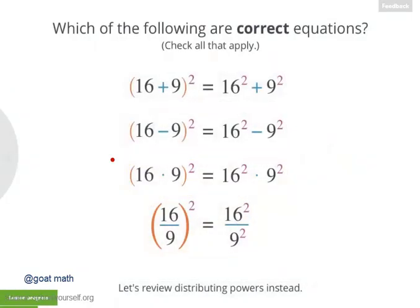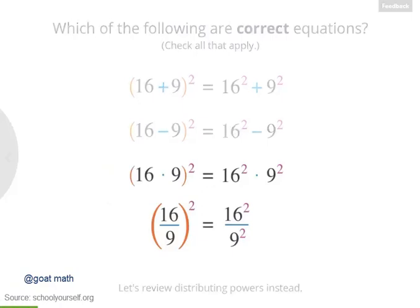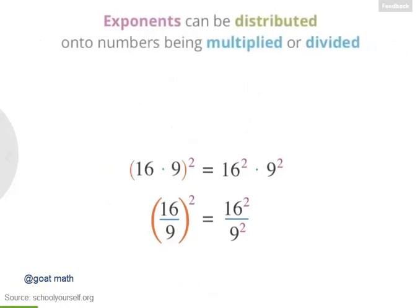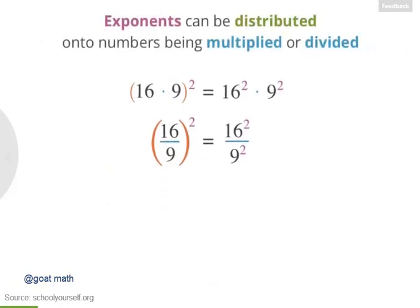Exactly — these two equations down here are correct, and that's because you can distribute exponents onto numbers that are being multiplied or divided. So you can distribute the square onto the 16 and 9 up here, and again over here.